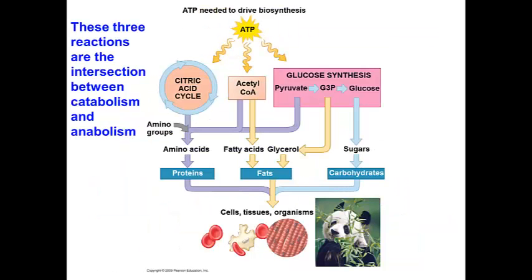Now let's look at the other side — anabolism. Many metabolic pathways are involved in the biosynthesis of biological molecules. Not everything is oxidized to make ATP energy. To survive, cells must be able to biosynthesize molecules that are not present in foods. Often the cell will convert intermediate compounds of glycolysis and the citric acid cycle to molecules not found in food. Or, if you're sedentary and don't need to make ATP, those molecules must be put into some kind of storage, like adipose tissue.